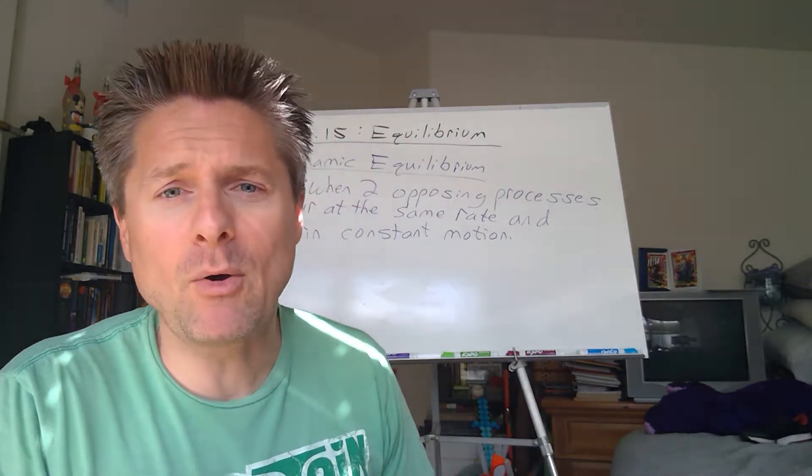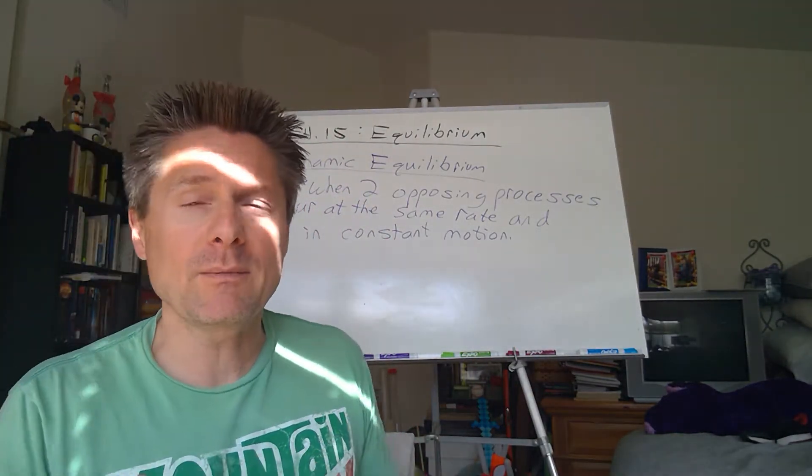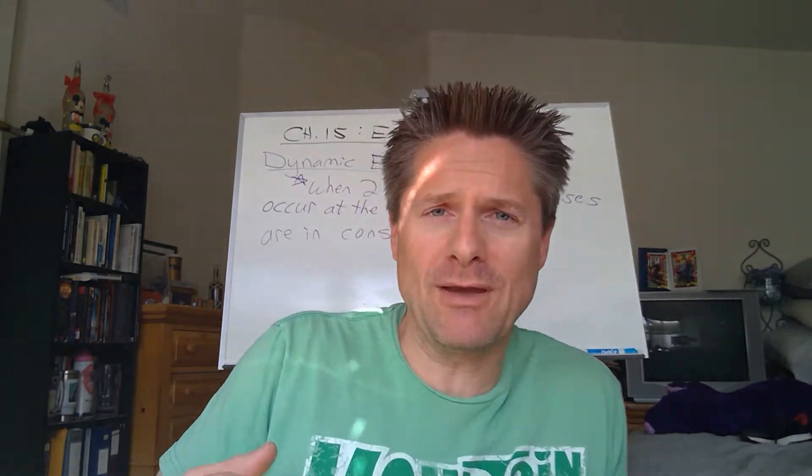So equilibrium in general is when, as you can see on the board here, you have two opposing processes occurring at the same rate. Now we're going to be looking at two different aspects of this and focusing on one. There's static equilibrium and there's dynamic equilibrium. So static equilibrium is when you have two opposing processes, but they're not in constant motion.